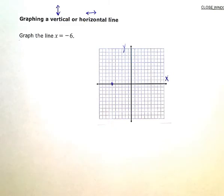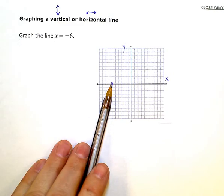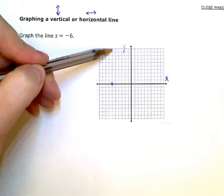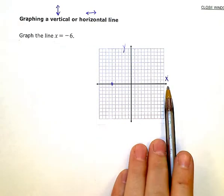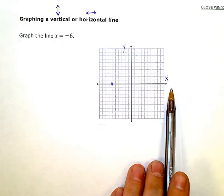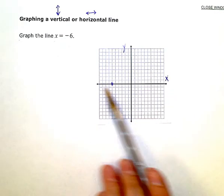So my line has to cross through that dot, either perfectly vertical or perfectly horizontal. Now, if it's perfectly horizontal, it'll be the x-axis.